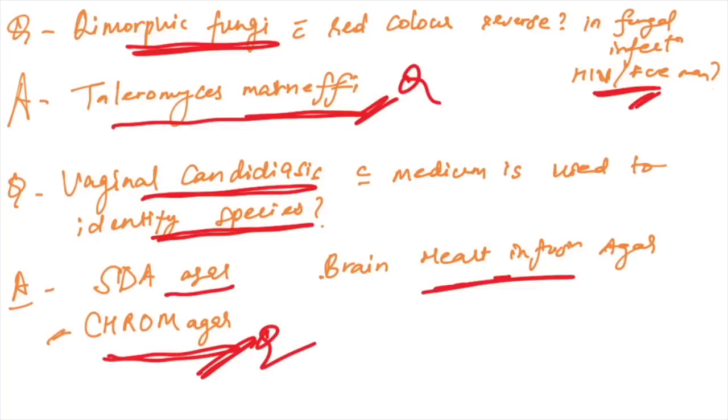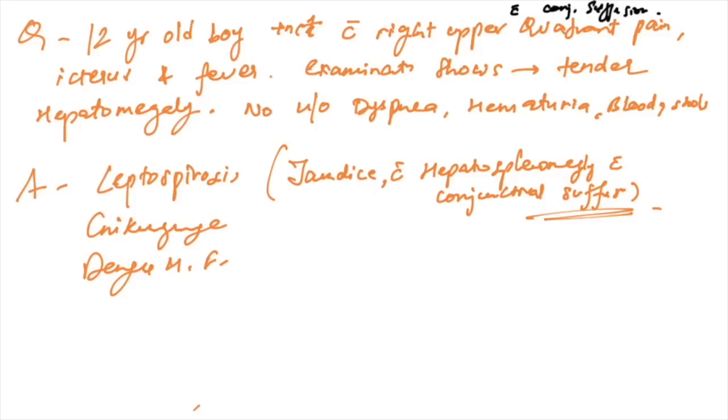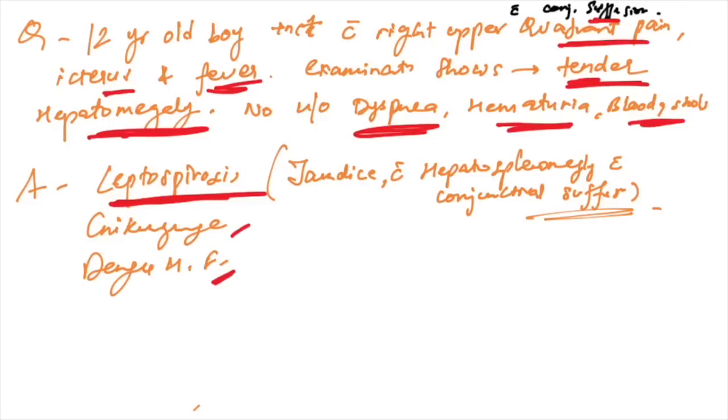A 12-year-old boy came with right upper quadrant pain, icterus and fever. Examination shows tender hepatomegaly, no history of dyspnea, hematuria, bloody stools. Conjunctival suffusion is present. Options were leptospirosis, chikungunya fever, and hemorrhagic fever. Answer is leptospirosis because this triad of jaundice with tender hepatomegaly and splenomegaly with conjunctival suffusion is seen in leptospirosis.